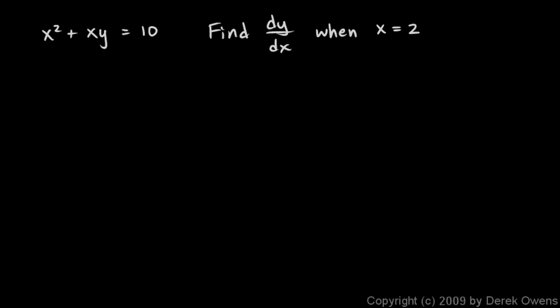Here's the next example: x squared plus xy equals 10. Find dy/dx when x equals 2. A problem very similar to this has appeared on the AP exam in the past, and implicit differentiation shows up quite often — every AP calculus exam I've seen has had multiple questions on this topic. So this is a good thing to study when preparing for the AP exam.